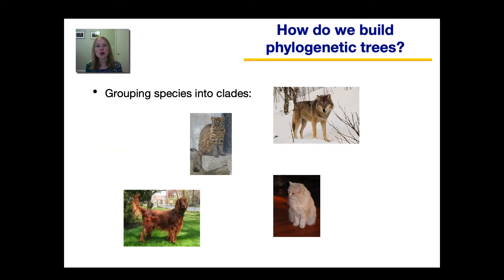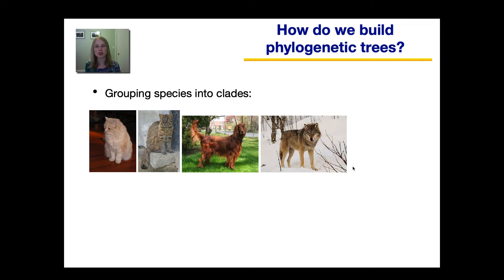Let's take a look at this simple example. If I showed you pictures of these four animals, you would probably notice that the domestic cat has more similarities with the wild leopard cat than it does with the dog or the wolf. And the dog and the wolf are more similar to each other than they are to either cat. So you could begin creating groupings: the domestic cat and the leopard cat could be one clade, and the dog and the wolf could be another clade.